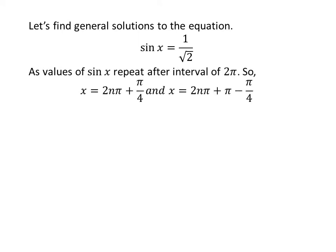Let us find the general solutions. As we know the values of sine of x repeat after interval of 2 times pi, so the general solutions are 2 times n times pi plus pi upon 4 and 2 times n plus 1 times pi minus pi upon 4.